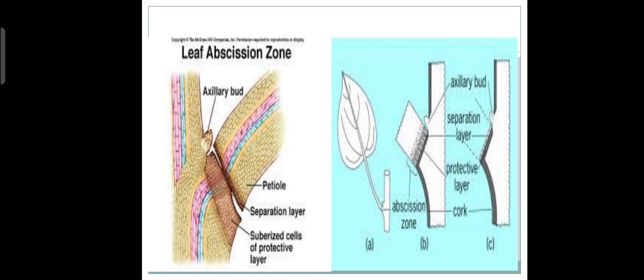Here in this diagram, you can see the position of the Obsession Zone. In the left-hand diagram, you can see the separation layer, suberized cells of the protective layer, and new axillary bud formation. And in the petiole region, you can see there is a demarcation of a distinct vascular strand. Here cortex bundles have detached but still there is vascular conduction, visible in pink and bluish color. This is the vascular strand which is still present in the petiole region.